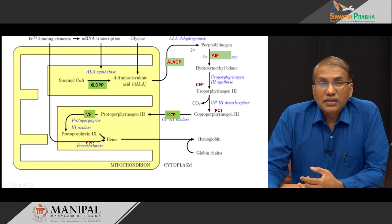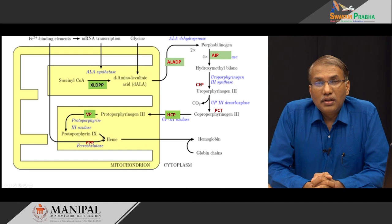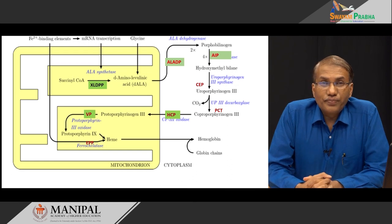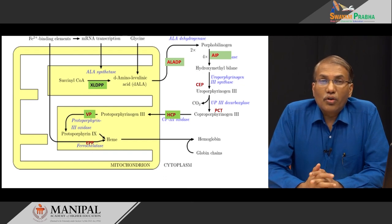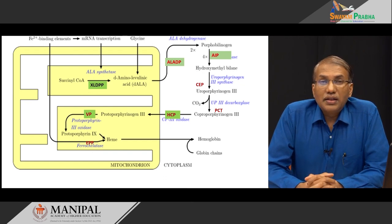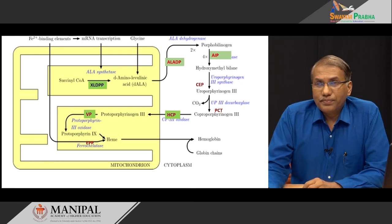Unlike congenital porphyria, acquired porphyria — if diagnosed — can be effectively treated by removing the source of lead poisoning, and the patient can become completely normal.